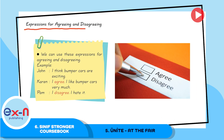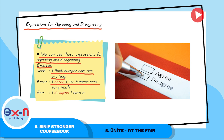Expressions for agreeing and disagreeing. We can use these expressions for agreeing and disagreeing. For example, a conversation between John, Karen, and Pam. John says: I think bumper cars are exciting. Karen agrees. Pam agrees: I agree — I like bumper cars very much. But Pam disagrees. Pam says: I disagree — I hate it.